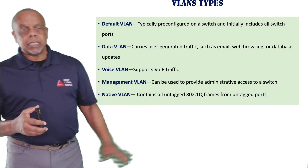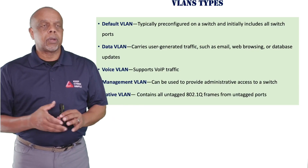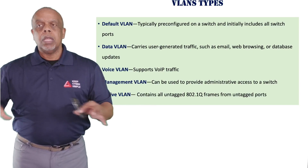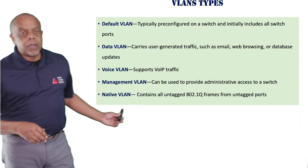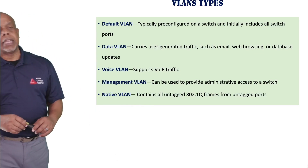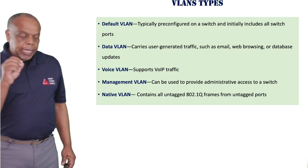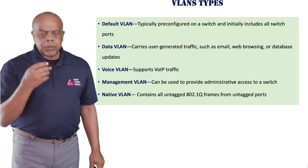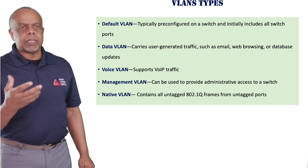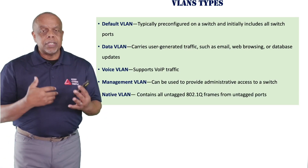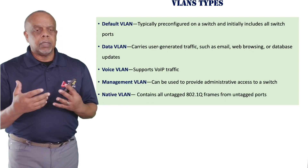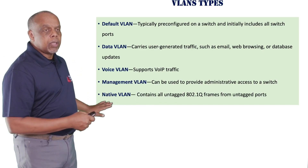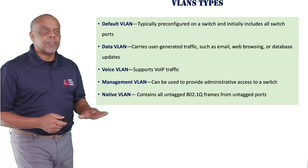The management VLAN gives the network team access to all the switches on the network because they're all part of it. We also have what we call a native VLAN, and this really comes down to trunking. With the 802.1Q protocol, it tags frames and ports. If you have data moving across the trunk that is not tagged, it would travel across the native VLAN. So those are your different types of VLANs — hopefully that gives you a better idea of what VLANs are and how they operate on your network.